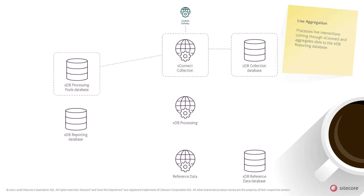In other words, when an interaction is submitted to the XConnect collection service — for example, when a session on the content delivery server ends — a live aggregation plugin in XConnect reacts. This plugin saves a record in the XDB Processing Pools database, telling the XDB Processing Application role to handle the new information.